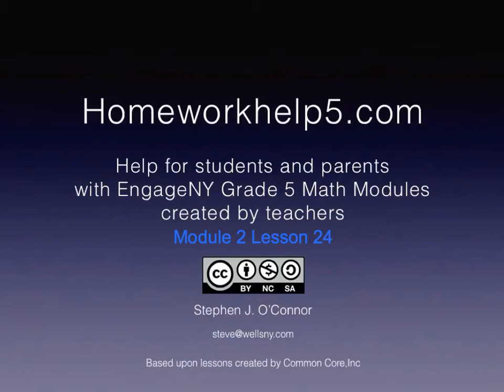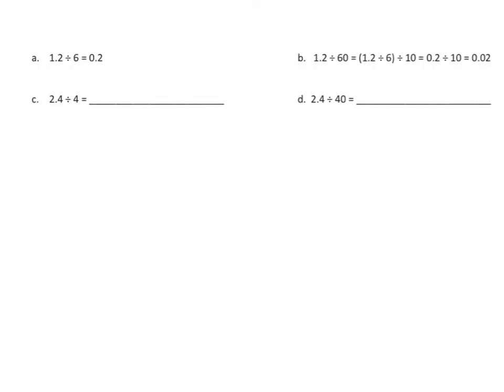In Module 2, Lesson 24, we make a transition from dividends with whole numbers to dividends with decimals. We're going to be working with two-digit divisors. Let's go over these problems. The first thing I want to tell you is ignore the example shown — it's not the way we did it in class, it's confusing. It has the right idea, but I'd like to write it a different way. So let's start with C and relate these two facts.